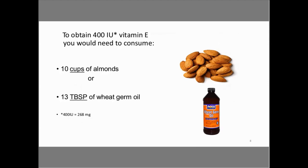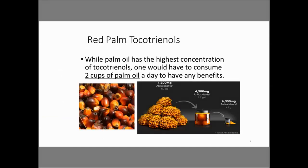Here's the first introduction to the subject because of the FDA labeling changes that are happening and for the next year and a half before they fully come into compliance. 400 international units, which is a unit of measurement, is now going to be designated as a milligram of weight — 268 milligrams. Red palm tocotrienols: while palm oil has the highest concentration, one would have to consume two cups of palm oil a day to have any benefits. It takes from 60 pounds down to 41 grams in a typical bottle of red palm tocotrienols.